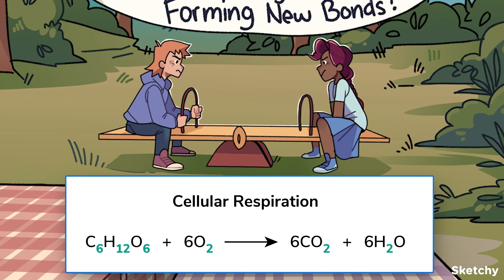H2O, for example, always has two hydrogen atoms. Otherwise, it wouldn't be water. Coefficients are the numbers in front of the molecules. They tell you how many copies of each molecule are needed in order to carry out the reaction, kind of like a recipe.